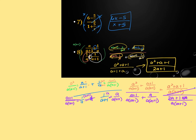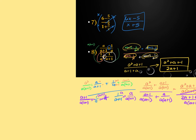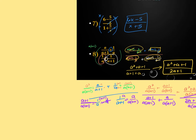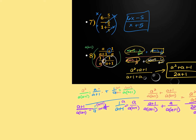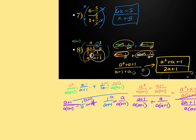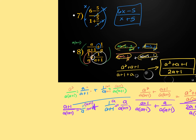Question about why LCD is a(a+1) and not just a: because a is different from (a+1) — those are two completely different terms. It's not like a and 2a. As soon as you have a plus or minus, it changes everything.